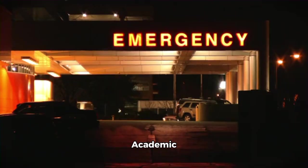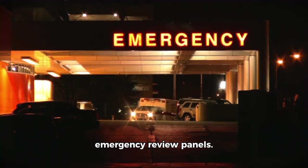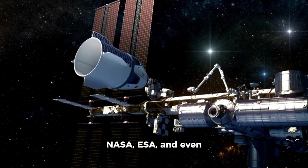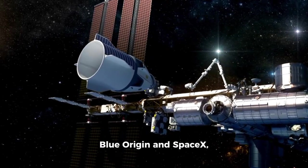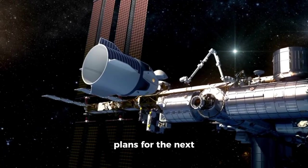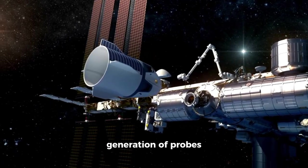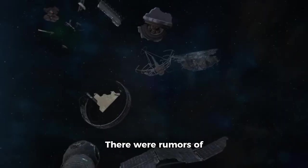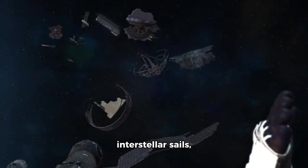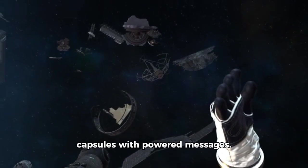Academic institutions begin emergency review panels. International space agencies, including NASA, ESA, and even private companies like Blue Origin and SpaceX quietly accelerated plans for the next generation of probes and telescopes. There were rumors of upcoming missions, AI, and concepts for interstellar sails, capsules with powered messages.